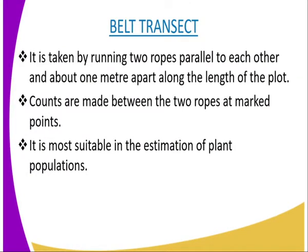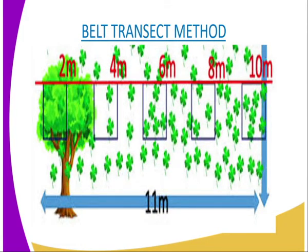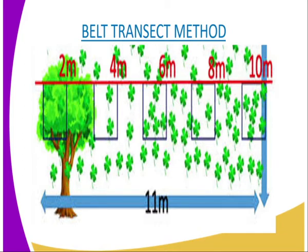Our second population estimation method is the belt transect. A belt transect is taken by running two ropes parallel to each other and about one meter apart along the length of a plot. Counts are made between the two ropes at marked points. Fewer belt transects are required to build up a realistic picture of distribution and evidence of land species in an ecosystem compared to the line transect. A belt transect is more suitable in the estimation of land populations and can equally be used to estimate populations of animals.